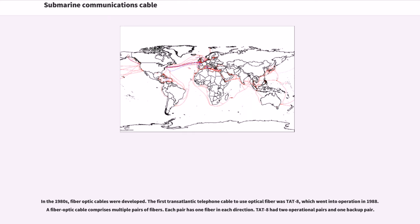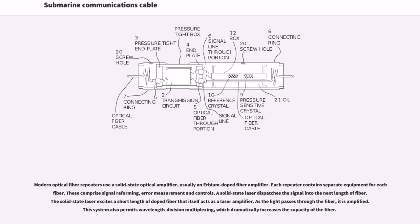In the 1980s, fiber-optic cables were developed. The first transatlantic telephone cable to use optical fiber was TAT-8, which went into operation in 1988. A fiber-optic cable comprises multiple pairs of fibers; each pair has one fiber in each direction. TAT-8 had two operational pairs and one backup pair. Modern optical fiber repeaters use a solid-state optical amplifier, usually an Erbium-doped fiber amplifier. Each repeater contains separate equipment for each fiber, comprising signal reforming, error measurement, and controls. A solid-state laser dispatches the signal into the next length of fiber, where it is amplified. This system also permits wavelength division multiplexing, which dramatically increases the capacity of the fiber.